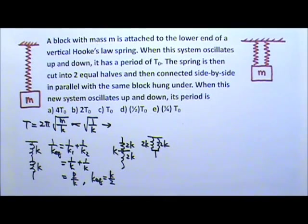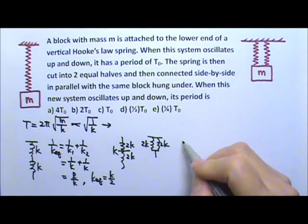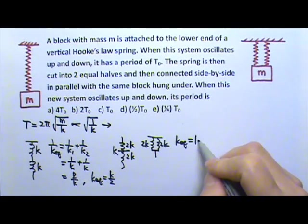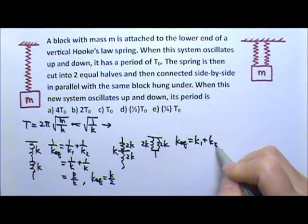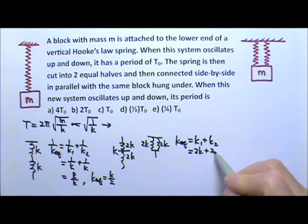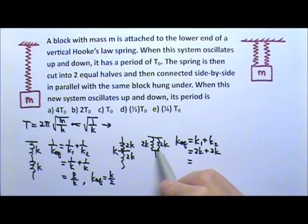If you remember, when we put two springs in parallel to find the equivalent spring constant, we just have to do K1 + K2. In this case, K1 is 2K, K2 is also 2K. So the equivalent spring constant for these two in parallel is 4K.